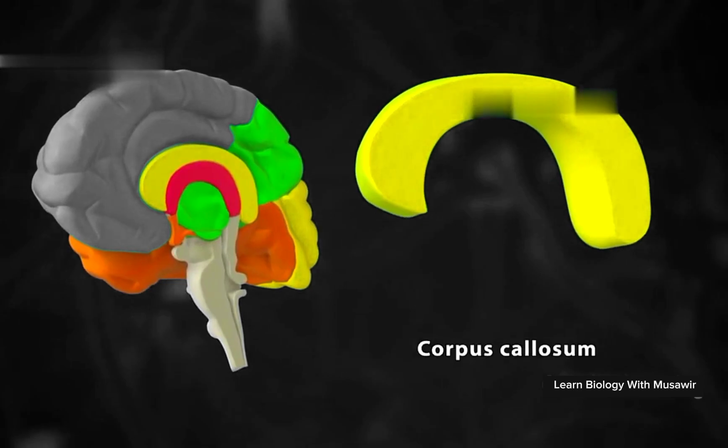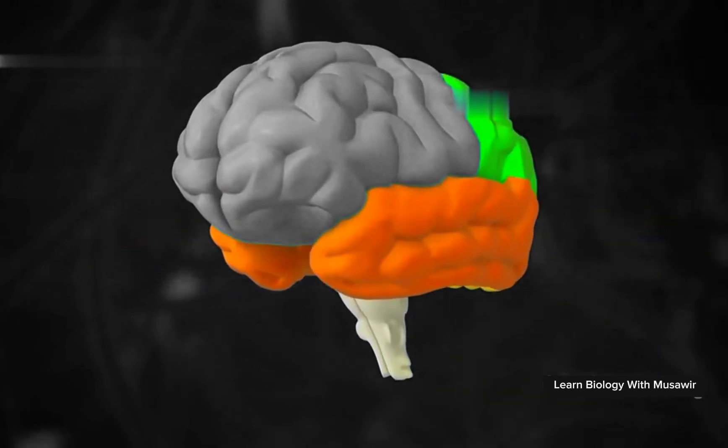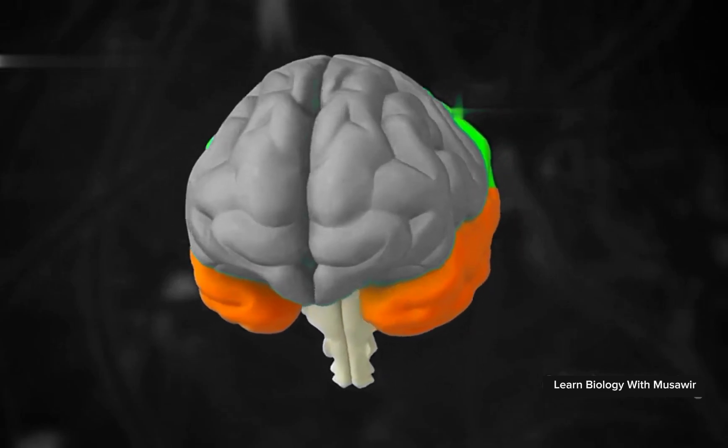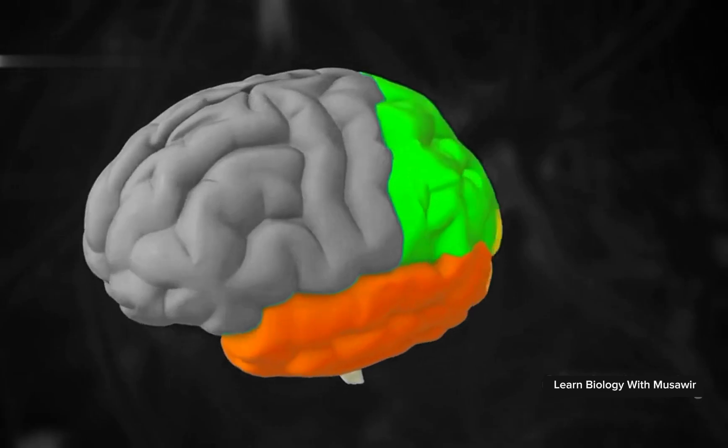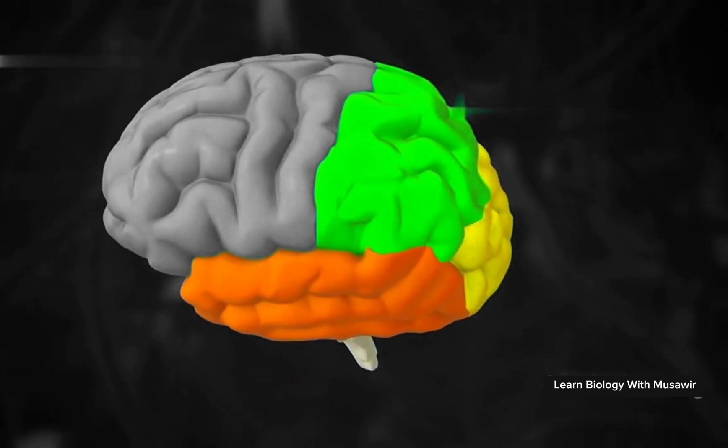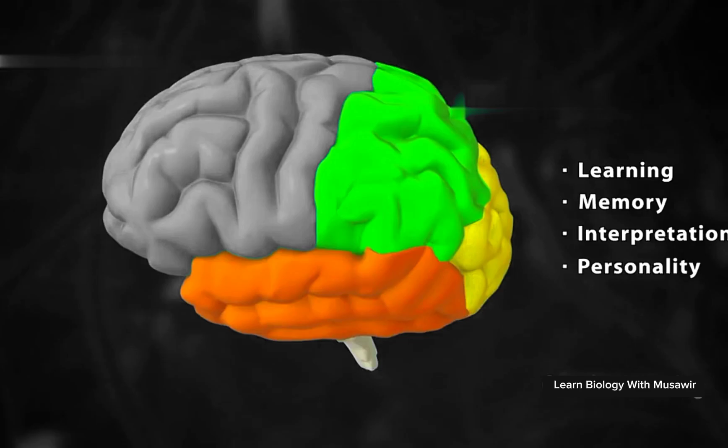The surface of the cerebral hemispheres is folded, which increases the surface area. The cerebrum is concerned with learning, memory, interpretation, and personality.